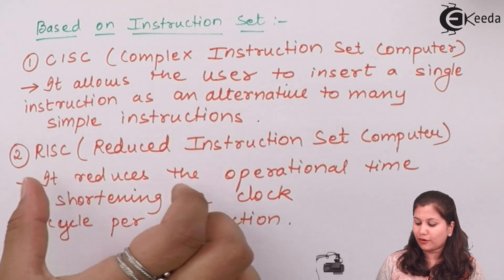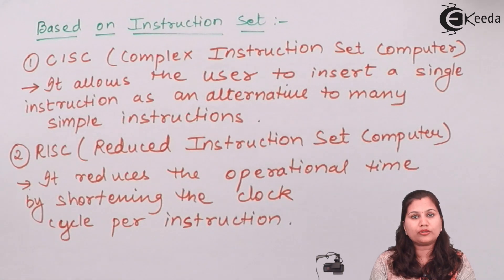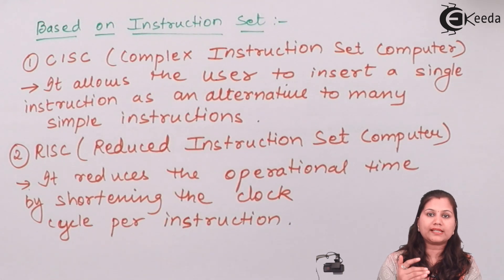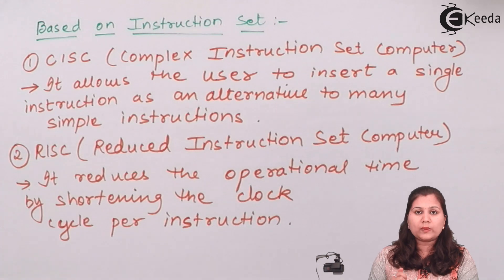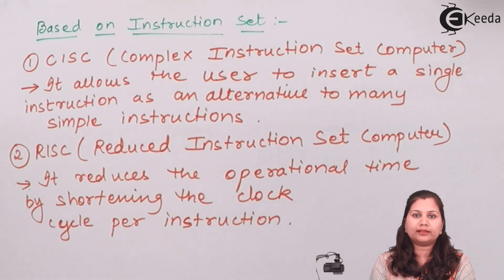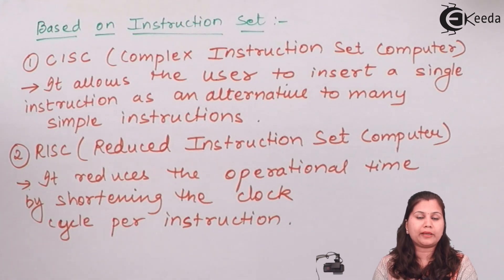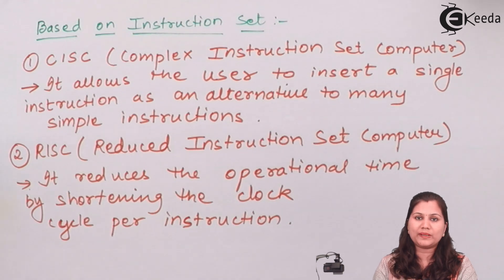In a Reduced Instruction Set Computer, the time taken to execute instructions is reduced. Microcontrollers can thus be classified based on their instruction set into CISC and RISC categories. This was the classification of microcontrollers — how we classify them based on number of bits, memory, and instruction set. I hope this video is clear to you.